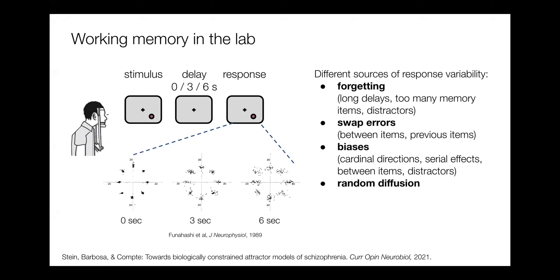One source could be that participants forget about the memories, which could be due to very long delays, or there might be several memory items so that the load is higher than what the subject can remember, but also we could introduce distractors over the delay period. Then there are other errors such as swap errors — confusions between several items that have been shown. There are more subtle sources of variability, such as biases toward cardinal directions or previously shown items as observed in serial effects. Finally, there's another source of variability not explained by any of these systematic sources of error, which is just a diffusion process of memory — memories get less precise over the course of the delay.